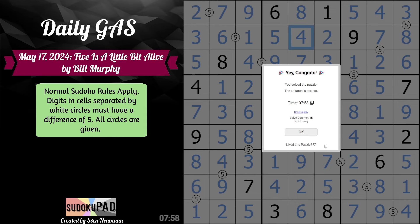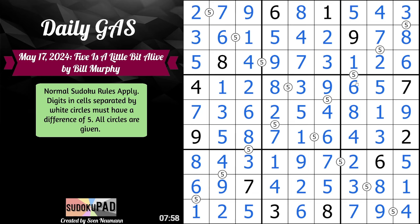In seven minutes and 58 seconds with Five is a Little Bit Alive by Bill Murphy. Wow — it's like I did all of that work and I almost messed up there at the end. I like the negative constraint. It's been a little while since we've seen a negative constraint in our daily gas puzzles. I've included a negative constraint in my newest puzzle, which I'll link down below. But shameless self-promotion aside, I hope you enjoyed, and thank you for watching.